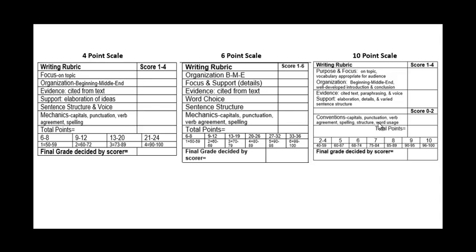This ten-point scale is a little different than the others in that the first two categories — focus and support and organization — all go together and are scored from one to four. The evidence and support go together and those are scored one to four. And then the conventions are a separate category scored between zero and two. I will provide you with the information of what each paper is scored for the four, six, and ten-point scale, and then these can be altered to go with your state rubrics.